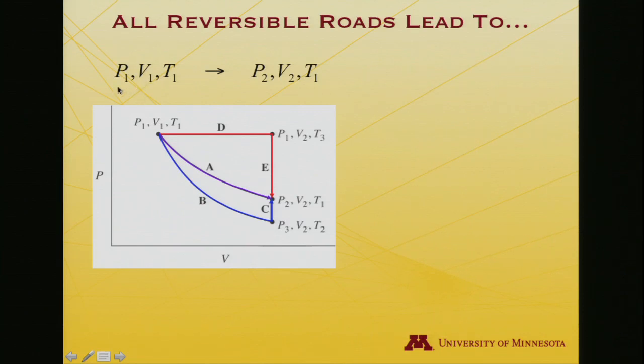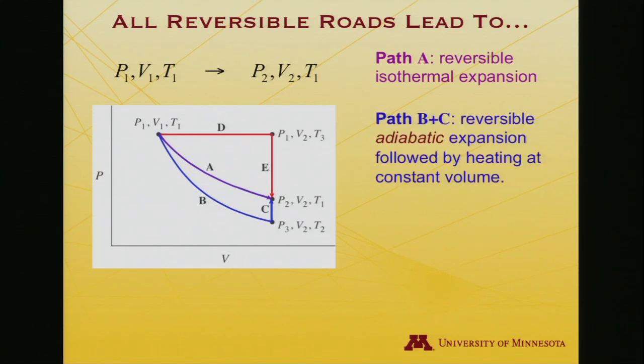So in each case, I want to go from an ideal gas at an initial pressure, I'll use one for my initial state, an initial pressure, volume, and temperature, to an ideal gas at a different pressure and a different volume, but the same temperature. So I actually will do this, well, the final temperature will be the same temperature. The path I take may be a little different. And so, path A, which is shown here in sort of violet, is going to be a reversible isothermal expansion. That is, the temperature is staying the same at every point along this curve. This is the ideal gas PV curve for a constant temperature.